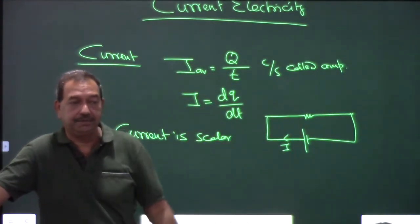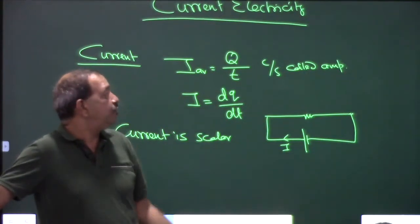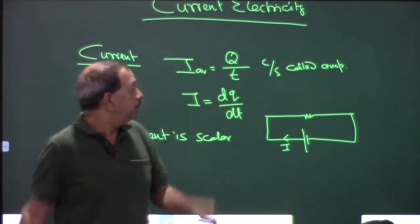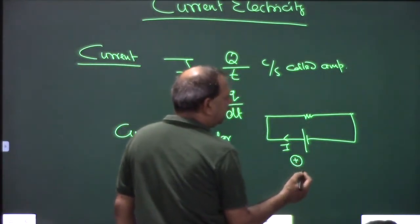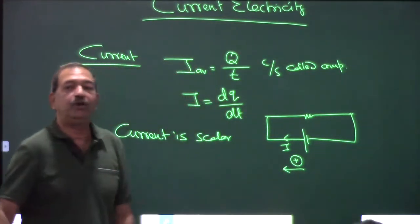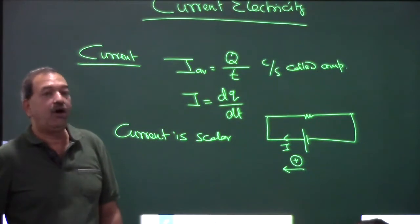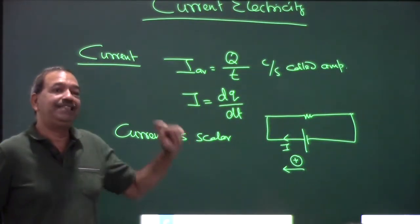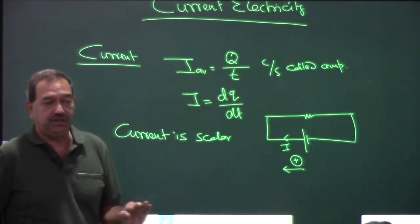The direction of current tells the conventional direction of motion of positive charge. It is basically the direction of the velocity vector of positive charge.